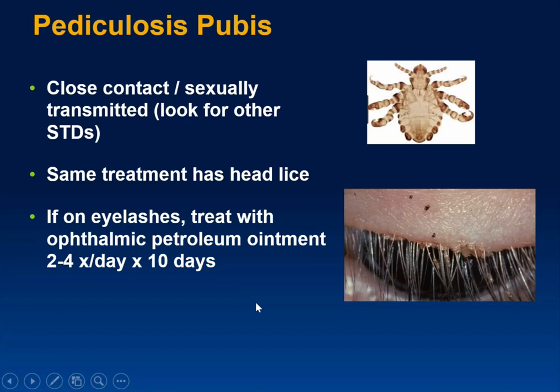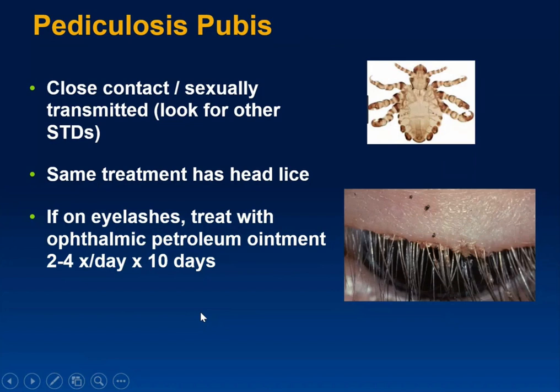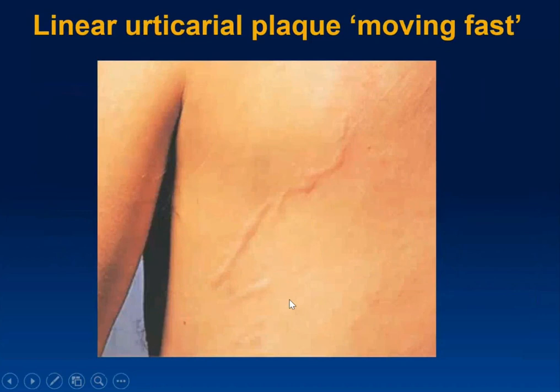Treatment for pubic lice is exactly the same as head lice. They generally do not transmit other infections. For eyelash involvement, you should not put standard treatments around the eye — instead, use ophthalmic petroleum ointment two to four times a day for about 10 days, which works to suffocate them. You can identify lice by their extremities, and the feces is the telltale sign.